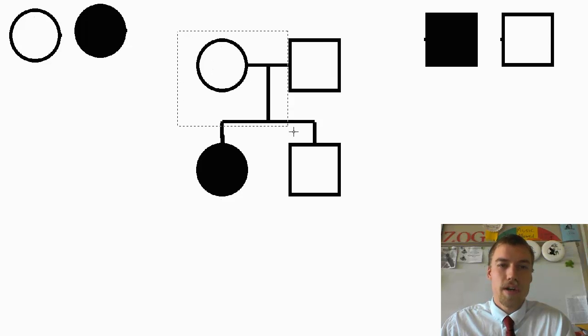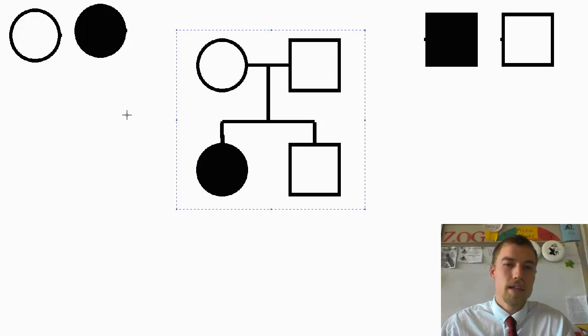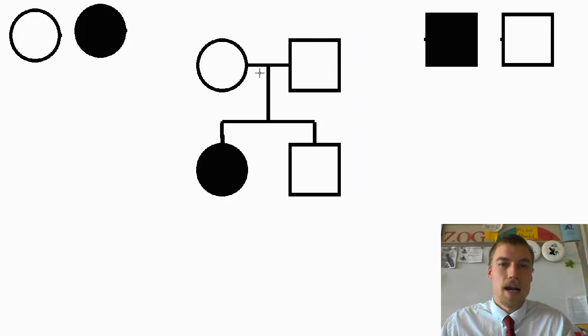So what we can see right here is that we have just sort of a basic pedigree. The circles are going to represent females and the squares are going to represent males. This line right here is showing us that these two are married and then these are going to be their offspring.